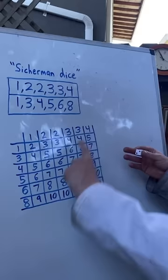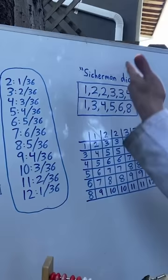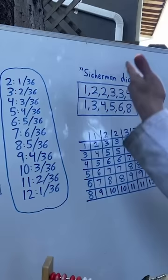There's still a one out of 36 chance of hitting a two or a 12, six out of 36 of hitting a seven, and all the others. And you can prove with polynomial equations that this is the only other set of dice that has that exact same odds.